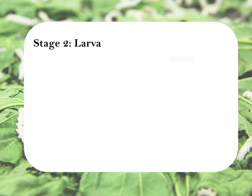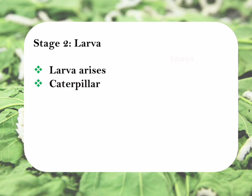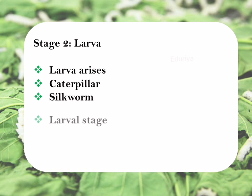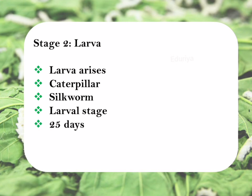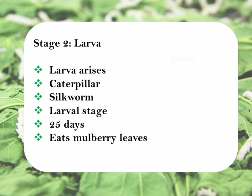Stage 2: Larvae. After few days, the larvae arise from the eggs. They are also known as caterpillar or silkworm. This stage is known as the larval stage. The larval stage lasts about 25 days and young caterpillars eat only mulberry leaves.